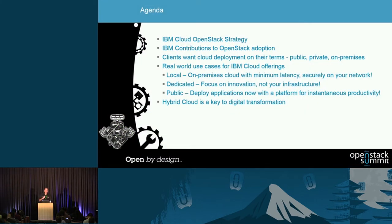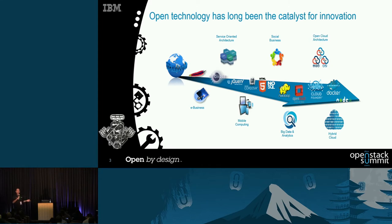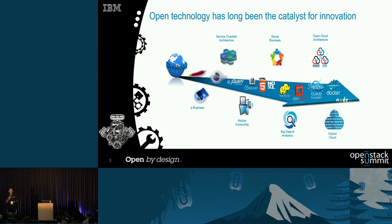Let's get started with our open cloud strategy. Those of you who attended the keynote heard Angel and Jesse talk about how open is important to IBM — open source in general, but OpenStack in particular. It isn't just about bringing IT technologies. It's about enabling automation, saving money, and providing on-demand capability.